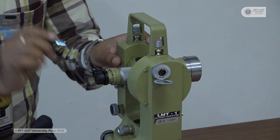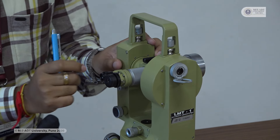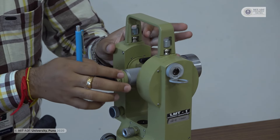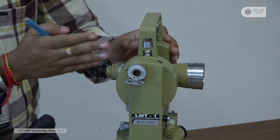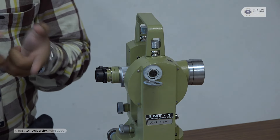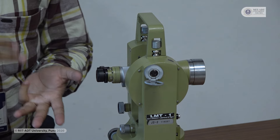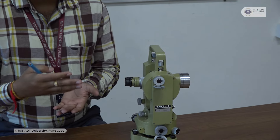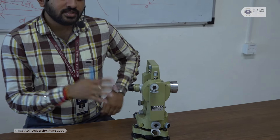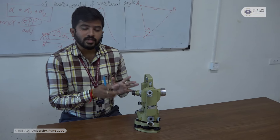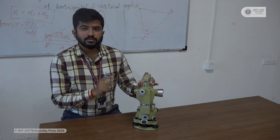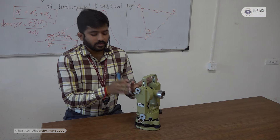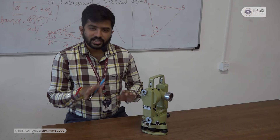This instrument has one-second accuracy, so the error is very nominal compared to the twenty-second error. This instrument is mainly used to perform horizontal angle, vertical angle, inaccessible object experiments, distance measurement, fly leveling, and profile leveling — it gives more accurate results than any other instrument. While performing any experiment, magnetic things should be kept away from this instrument because the spirit level will be much affected.